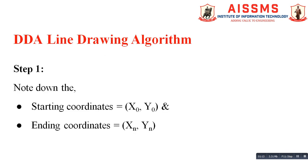Now let us see the steps to solve the DDA line drawing problem. For simplicity, we first note down the coordinates of the starting point and ending point given in our problem statement: x0 is the x-coordinate of the starting point, y0 is the y-coordinate of the starting point, xn is the x-coordinate of the ending point, and yn is the y-coordinate of the ending point. Our goal is to generate the coordinates of all the points between this starting point and ending point.